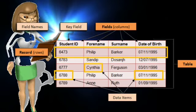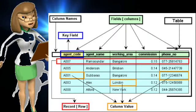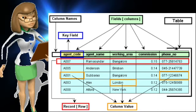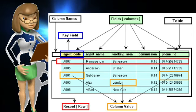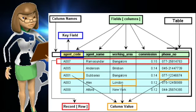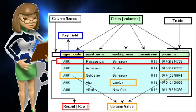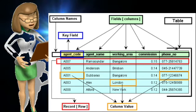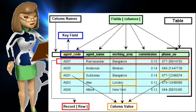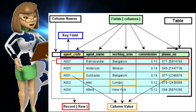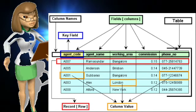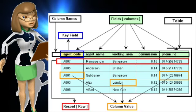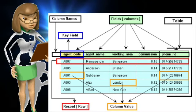A field is a column within a database that contains only one type of data. A record refers to rows — rows represent records. A row in a database is called a record, and it is made up of two or more fields. A record consists of information about a person, item, or organization.